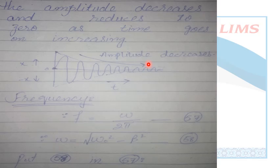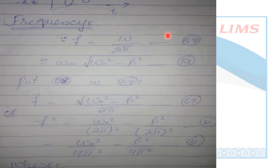Now we find the frequency. The frequency formula is f = ω/2π. The value of omega was proved in part 1 of this calculation: omega equals √(ω₀² − β²), which is equation 58. I substitute this omega value into equation 57 to get equation 59.